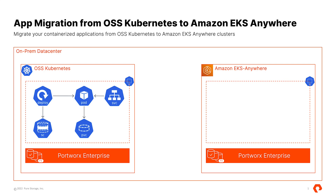The first scenario is where we are running our source and destination clusters for our migration demo inside the same data center. The source cluster is a vanilla or open source Kubernetes cluster and our destination is an Amazon EKS Anywhere cluster running on virtual machines on our VMware vSphere environment.